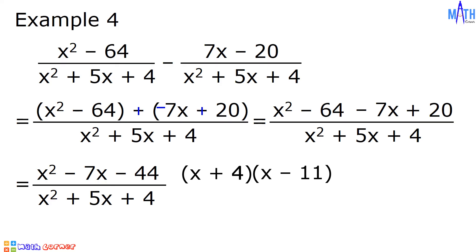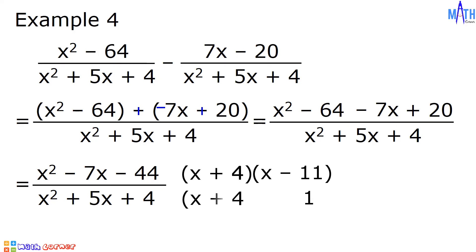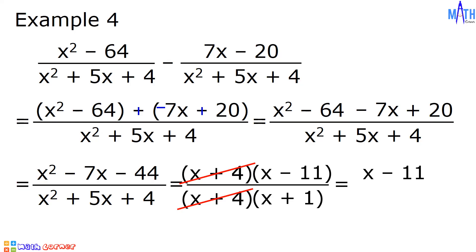In the denominator, x squared plus 5x plus 4: let us find factors of 4 that when added equal 5. The factors we need are 1 and 4, since 1 times 4 is equal to 4 and 1 plus 4 is equal to 5. So the factors are x plus 4 and x plus 1. Let us cancel out the common factor x plus 4, and we are left with x minus 11 over x plus 1. And this is the final answer. And that is how to add or subtract rational expressions with like denominators.